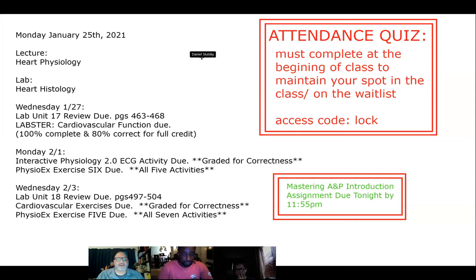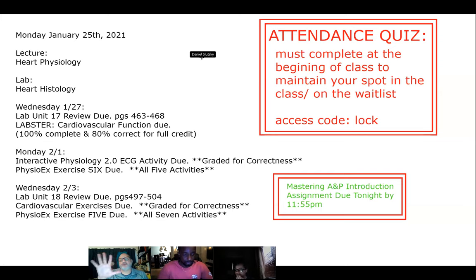Also, remember your first Labster activity is due — our lab simulator. You must complete the whole thing and get 80% correct for full credit. Next week on Monday, there's a handout on the interactive physiology on the ECGs, and that does need to be graded for correctness. Also your first of the two PhysioX exercises is due — it is PhysioX exercise six. We're doing six first. It does have five activities, so you'll be doing five lab reports and turning those in.